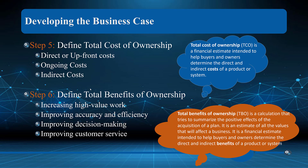Step 5 in developing the business case is defining the total cost of ownership. Notice there are direct or upfront costs, ongoing costs, and indirect costs. Here's an example of total cost of ownership — you can pause and read the slide. Let me give you an example.